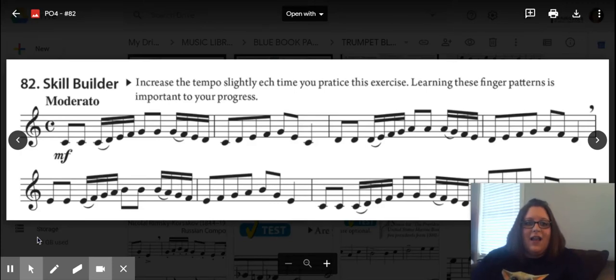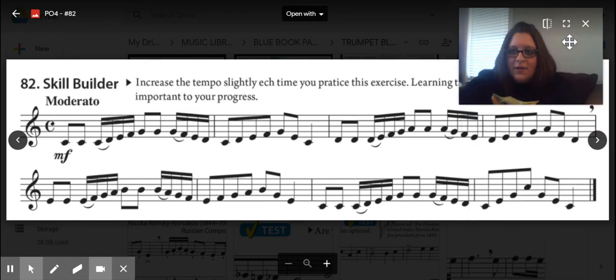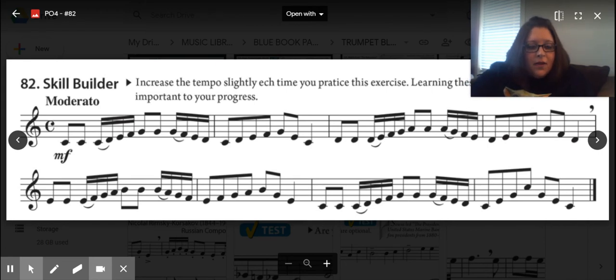Blue book pass off for line number 82 skill builder. No flats or sharps in the key signature, we have common time, and it looks like we've got some 16th notes. Let's make sure we know how to count this. We're just going to count the first line.